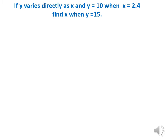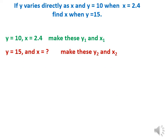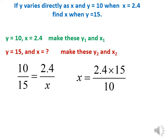If y varies directly as x, y equals 10 when x equals 0.4 — find x when y equals 15. This example doesn't need the full relation, so we can solve using the proportion method. We have y1 equals 10 and x1 equals 0.4; we want y2 equals 15, find x2. Using y1 over y2 equals x1 over x2: 10 over 15 equals 0.4 over x. So x equals 0.4 times 15 divided by 10, which gives x equals 0.6.